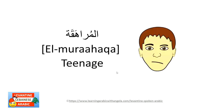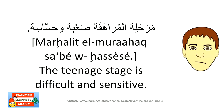Al-murahaqa is the teenage stage. Example: 'marhalat al-murahaqa sa'bi w hasasi' — the teenage stage is difficult and sensitive. Sa'bi comes from sa'b (hard/difficult) and hasasi means sensitive. Note that marhala is a feminine noun, so the adjectives take feminine endings: sa'bi and hasasi.